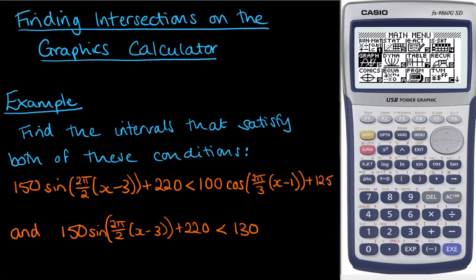The example that we're going to use is set up over here on the left-hand side. We've got these two equations, this left-hand one, the 150 one, and then the one on the right, the 100 one. We've had some sort of situation that led to these two equations. We need to find out when the 150 one is less than the 100 one, and also the 150 one is less than 130.